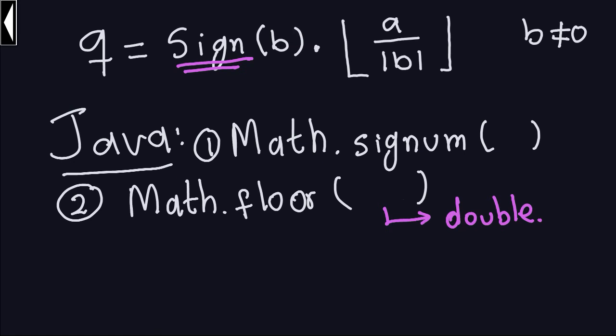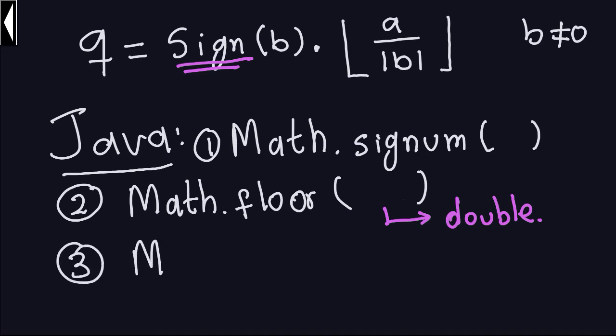You will also need to compute the absolute value of a number. Java has that method as well, and it's also part of the math package: Math.abs, and this one is for the absolute value of a number. If you want to know all the details on how these three functions work, I suggest you Google them and you'll find explanations online. They are very simple — what I just said is pretty much what they do.